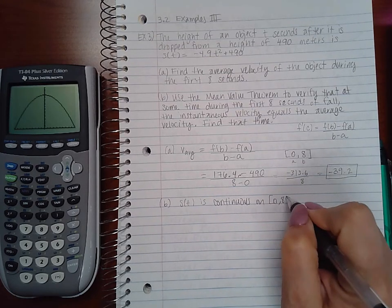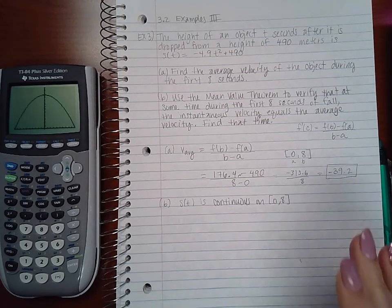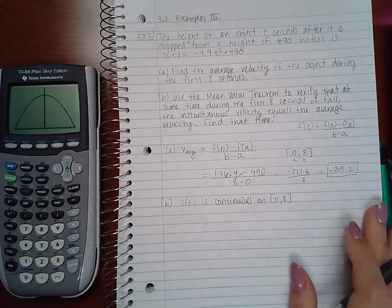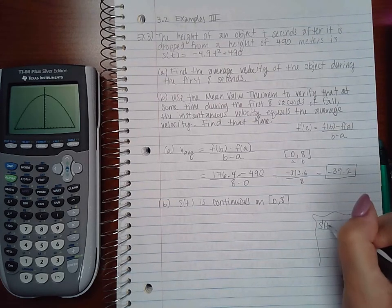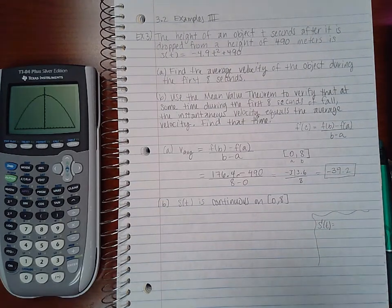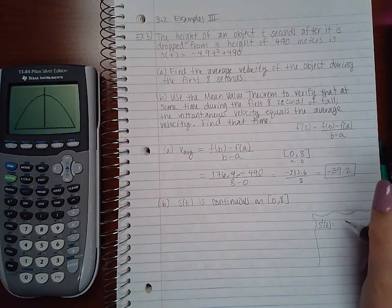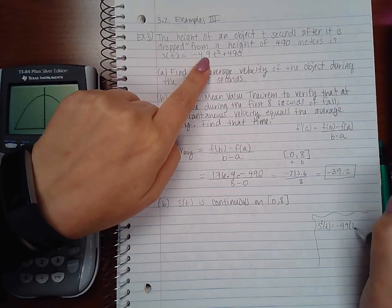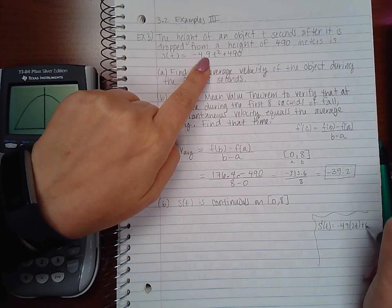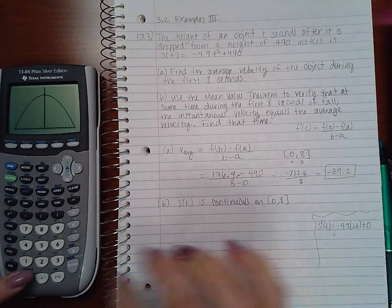And is it differentiable? We don't know. Let's go over here on the side and figure out what s'(t) is. So if we take the derivative of this, it's -4.9 times 2t + 0, which is -9.8t.